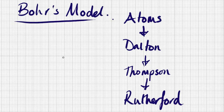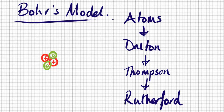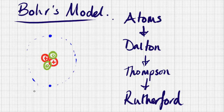In Bohr's model, in the nucleus we have positive particles called protons and neutral particles called neutrons, and they are orbited by electrically charged particles called electrons. The electrons have discrete energy levels — specific energies in their orbits — and they can move between these orbits.